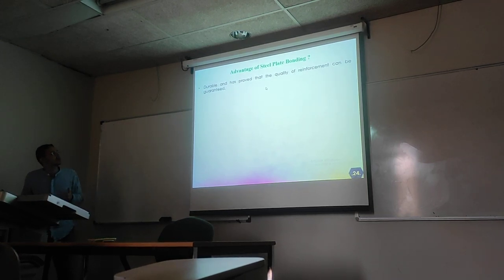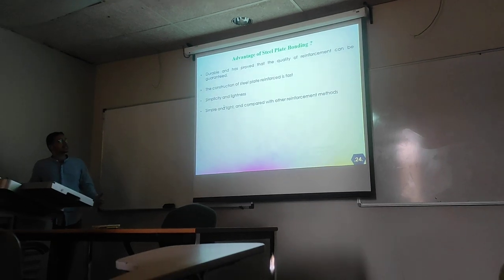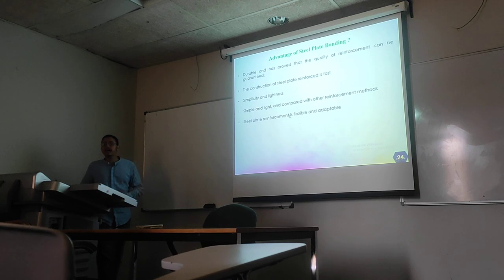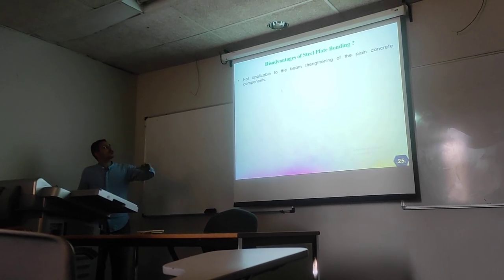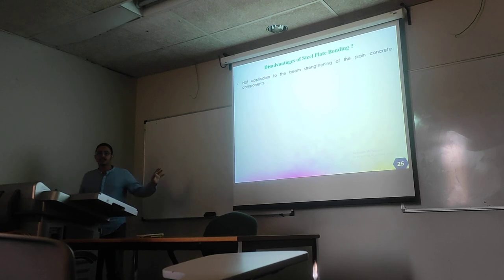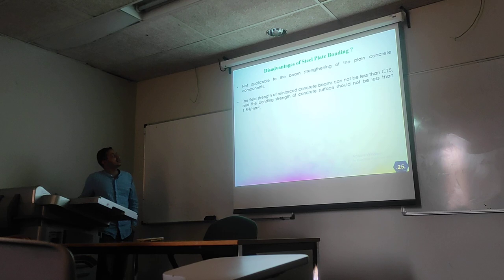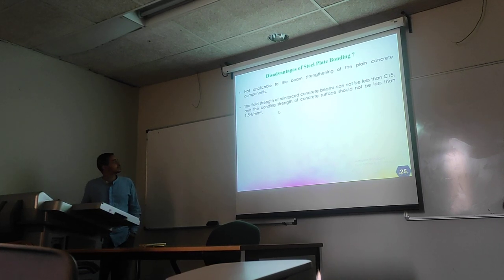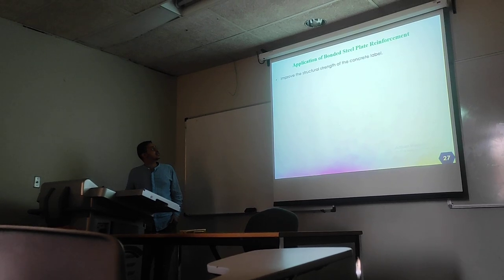Advantages of steel plate bonding: they are durable, quality of reinforcement can be guaranteed, construction is fast, and it is simple and light compared with other reinforcement methods. It is also flexible, adaptable, economical, and reasonable. Disadvantages: it is not applicable to plain concrete components because it needs existing steel. The compressive strength of reinforced concrete beams cannot be less than C15, and the bonding strength of the concrete surface should not be less than 1.5 N/mm². It is also prone to corrosion.